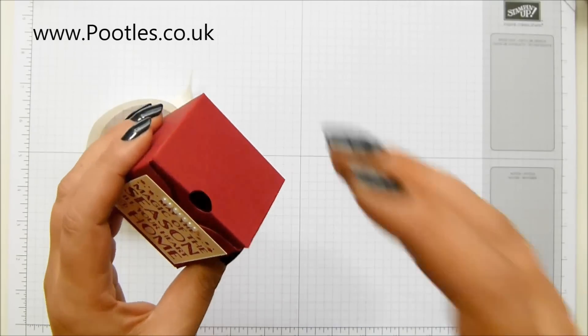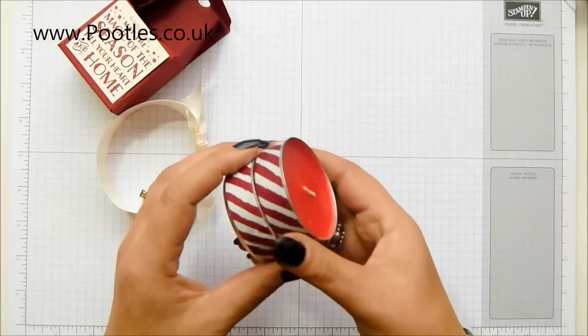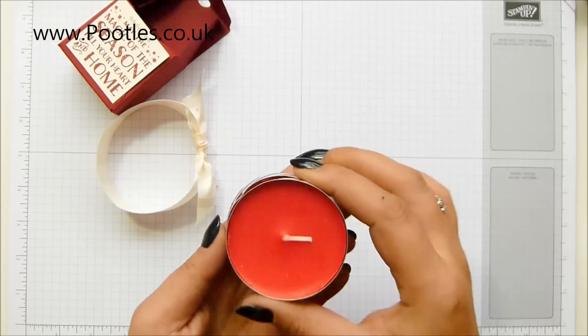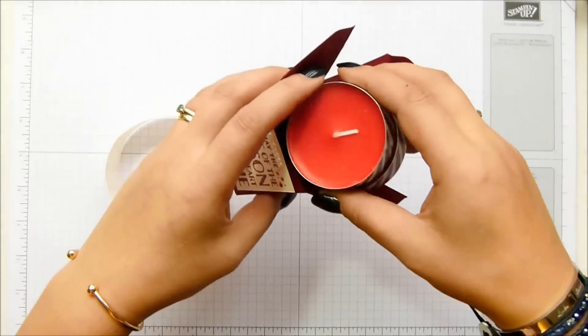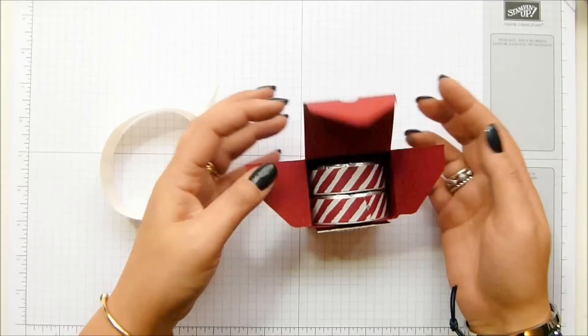This one here is actually an envelope punch board box that holds two jumbo tea lights. Now these are the ones that you can get from Ikea or you can get them in your local supermarket. And I have got mine here, two jumbo ones, raspberry scented, berry scented of some sort.